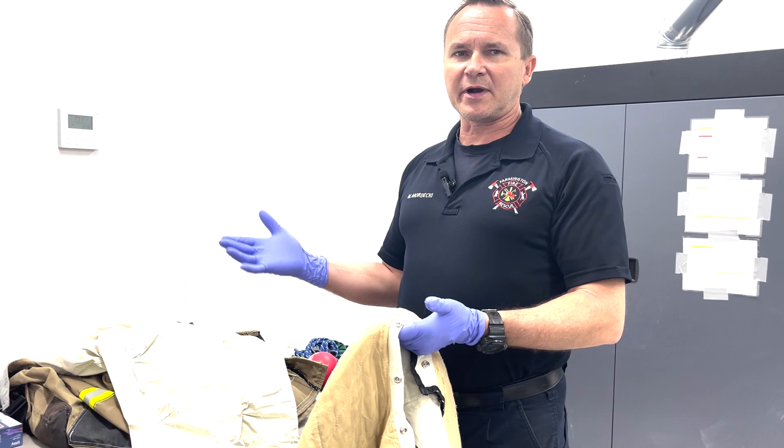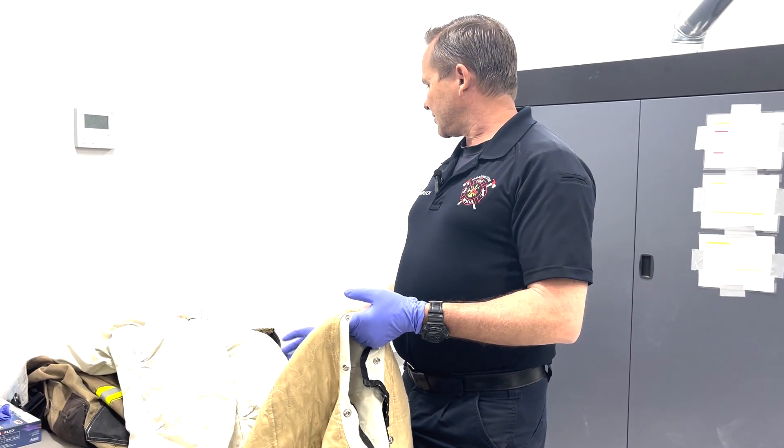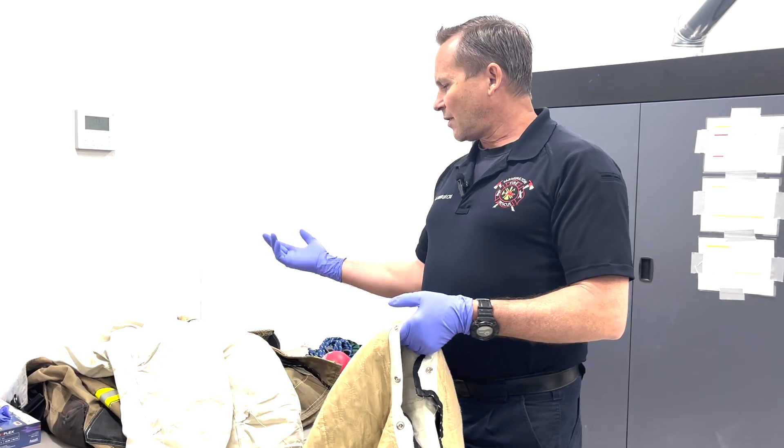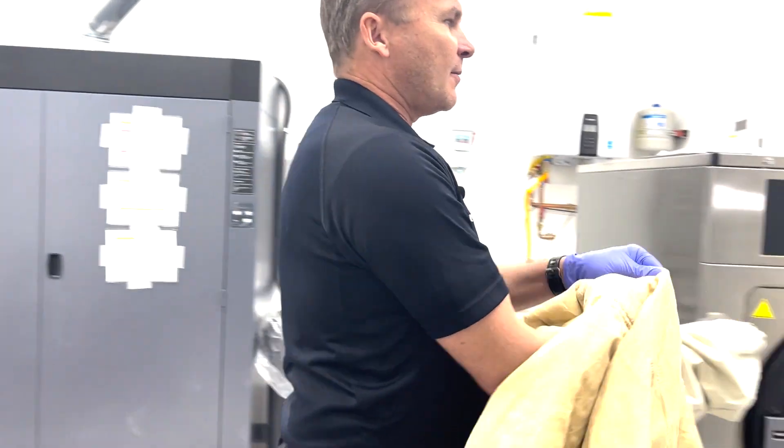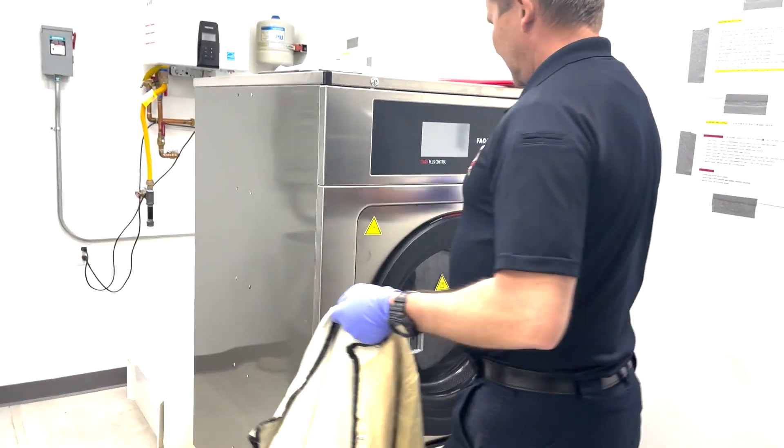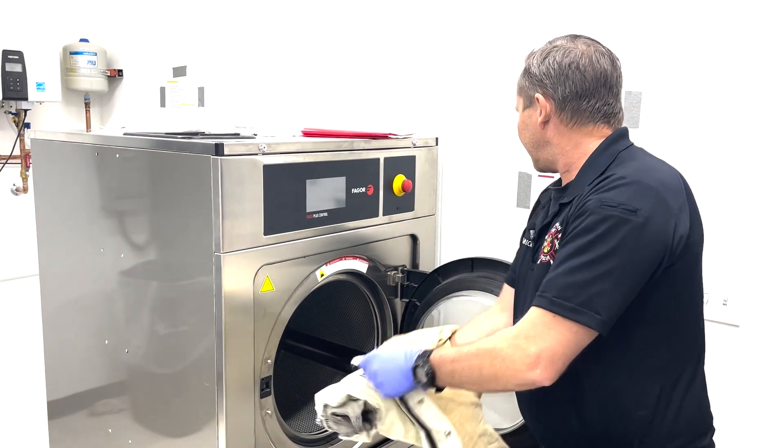Make sure you're wearing your PPE before you take apart your gear. Take apart your liners and your shells. We'll wash the liners together with the hood. Turn the liners inside out, then come over here to the new machine. We're going to open it up and load it just like normal.